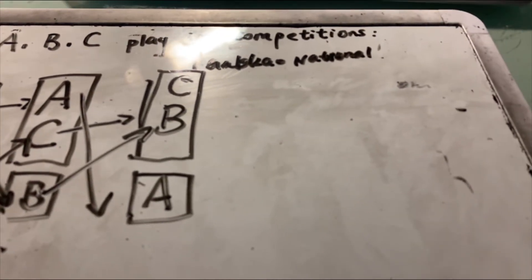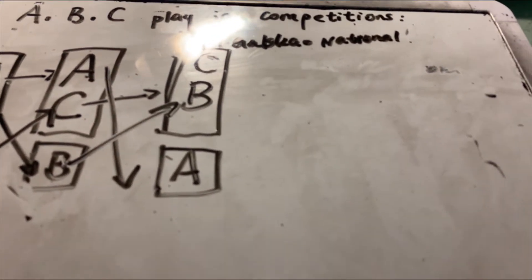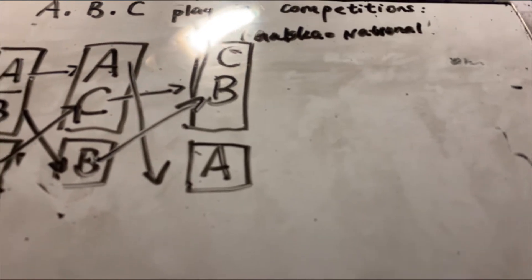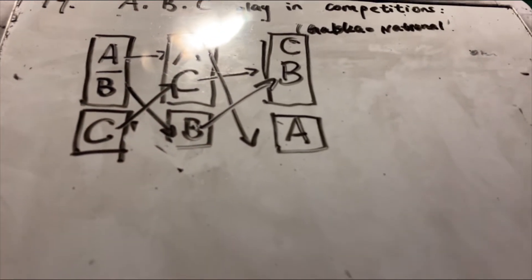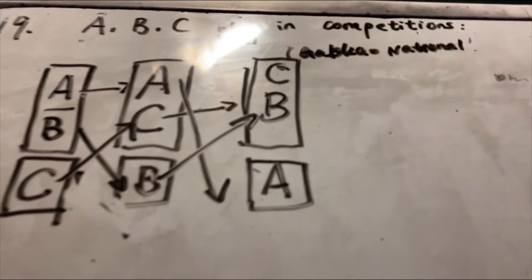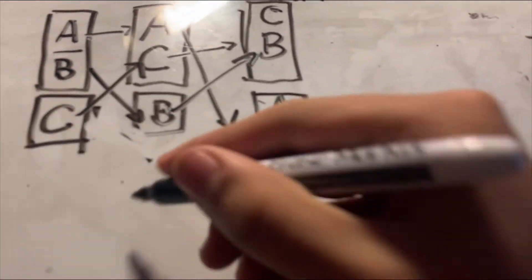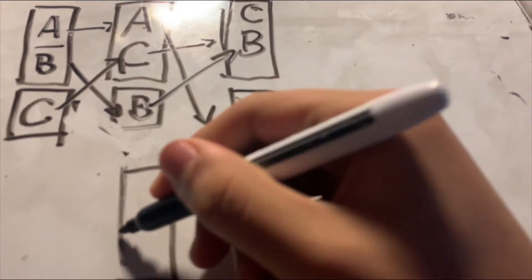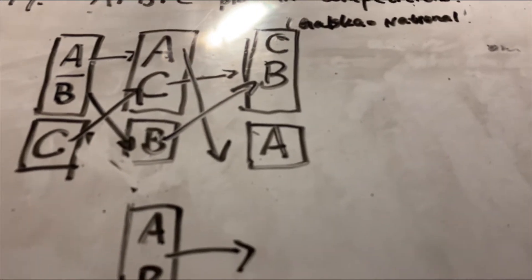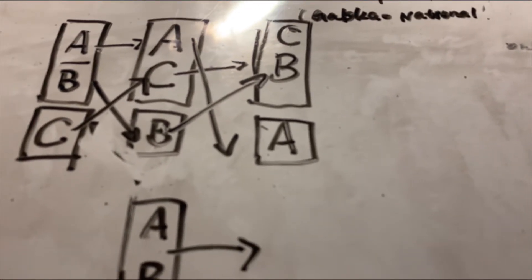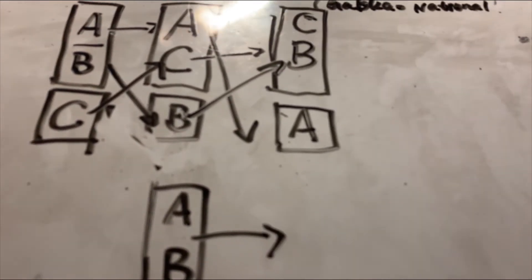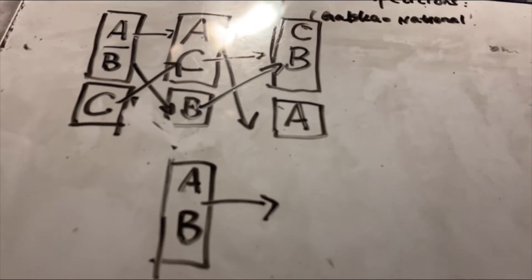The rule is that a person who loses two times is eliminated. After the one person who has lost two rounds gets eliminated, the remaining two people compete until one of them has lost two times and is eliminated.